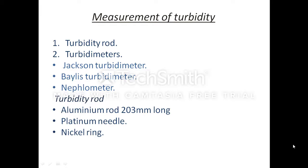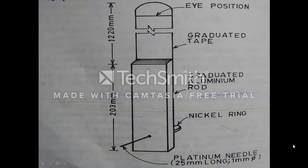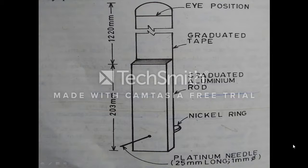The turbidity rod consists of an aluminium rod 203 mm long, a platinum needle, and a nickel ring. As shown in the diagram, an aluminium rod about 203 mm long is graduated. The upper end of the rod is fixed with a graduated tape and the lower end is fixed with a screw, with a platinum needle and a nickel ring. In the nickel ring, a stick is inserted so as to keep the rod vertical.